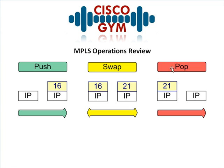Pop is generally your end-of-the-line operation. This is when your router receives a packet that has a label assigned to it, but its job is to send it out without a label. So it says I've got this packet that has a label, but according to my LFIB I'm supposed to get rid of this label and send it out untagged — or in the case we're using more than one tag in a label stack, it would just pop the top one. So it pops off that label, in this case 21, and sends the packet out unlabeled.